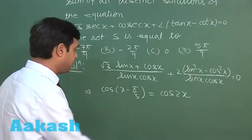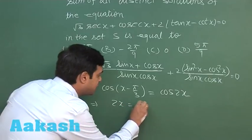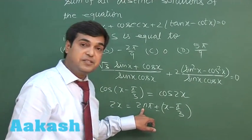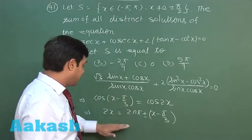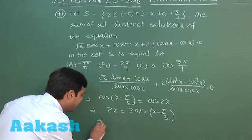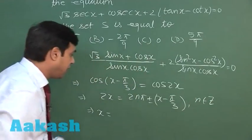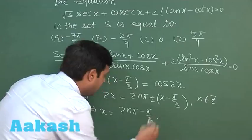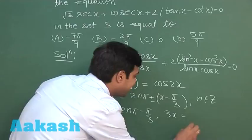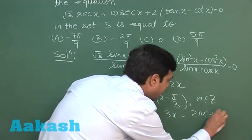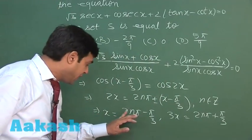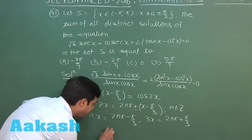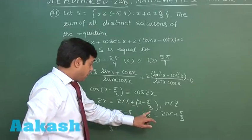Using the identity cos θ = cos α gives general solution 2x = 2nπ ± (x − π/3). Taking the positive sign: 2x = 2nπ + x − π/3, so x = 2nπ − π/3. Substituting n = 0 gives x = −π/3, which lies in (−π, π). Other values from this case fall outside the interval, so one solution is −π/3.